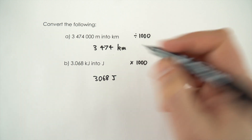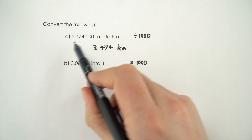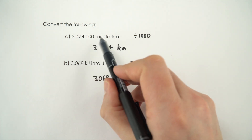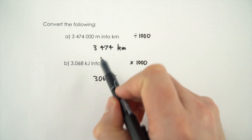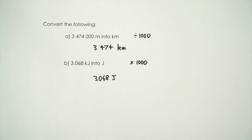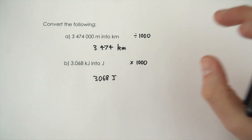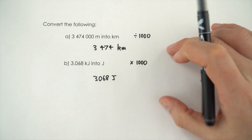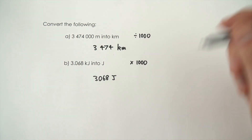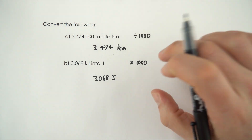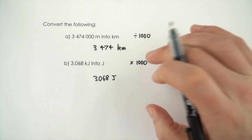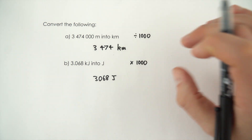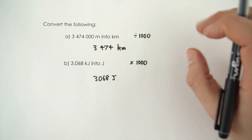That's all there is to it really — we're just moving the decimal place either three places this way or the other way. So those are the first pretty straightforward examples, but if you have a look at the video down below, we're then going to look at what happens if you have area and then volume.